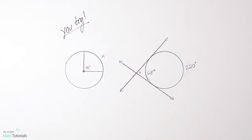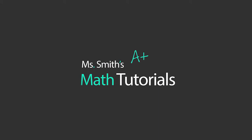Here are two problems for you to try. Figure out what relationship is occurring, then use the correct formula to find x or the missing information. I will post the answer for x in the video description below. This has been Miss Math Tutorials.